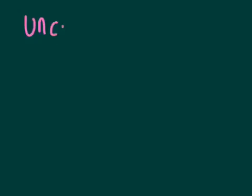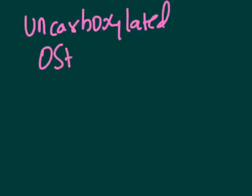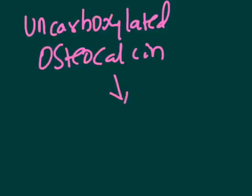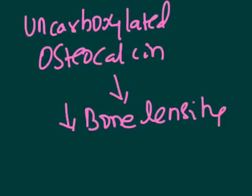Whenever you find more uncarboxylated osteocalcin, this indicates bone pre-mineralization and decreased bone density. Uncarboxylated osteocalcin is seen in vitamin K deficiency and indicates a decrease in bone density. That is one of the most important functions of vitamin K in bone health.